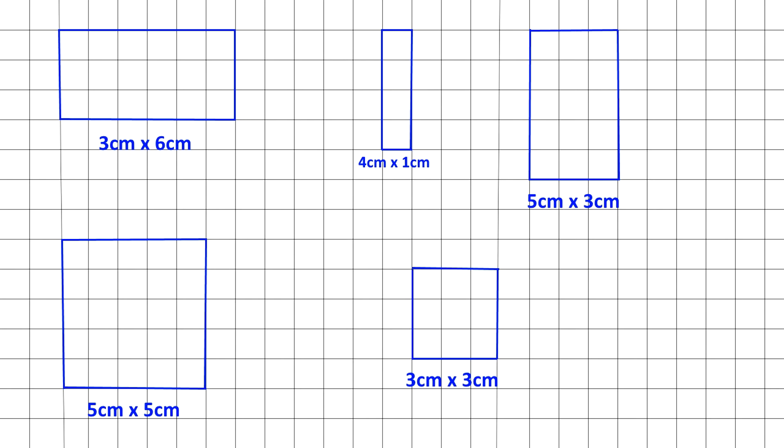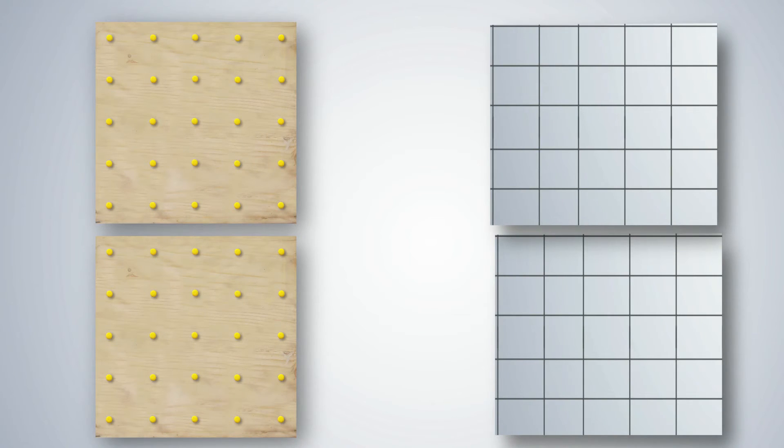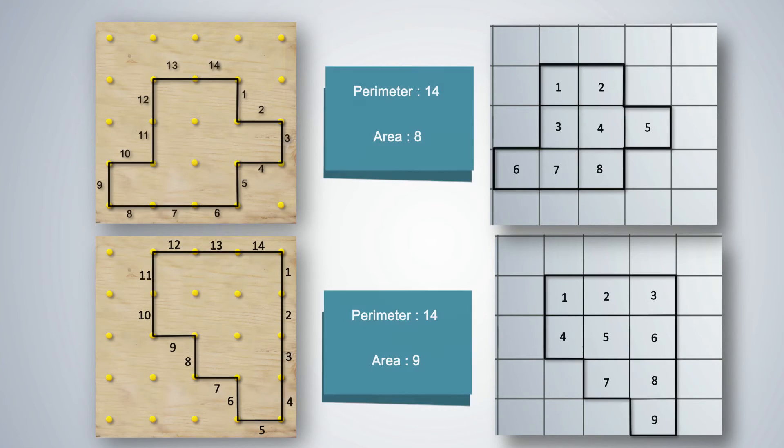They can first use the geoboard and then draw on paper. To calculate the area of irregular figures, students can use the geoboard and square rule paper. Two figures with the same perimeter, say for example 14 units, may have different areas.